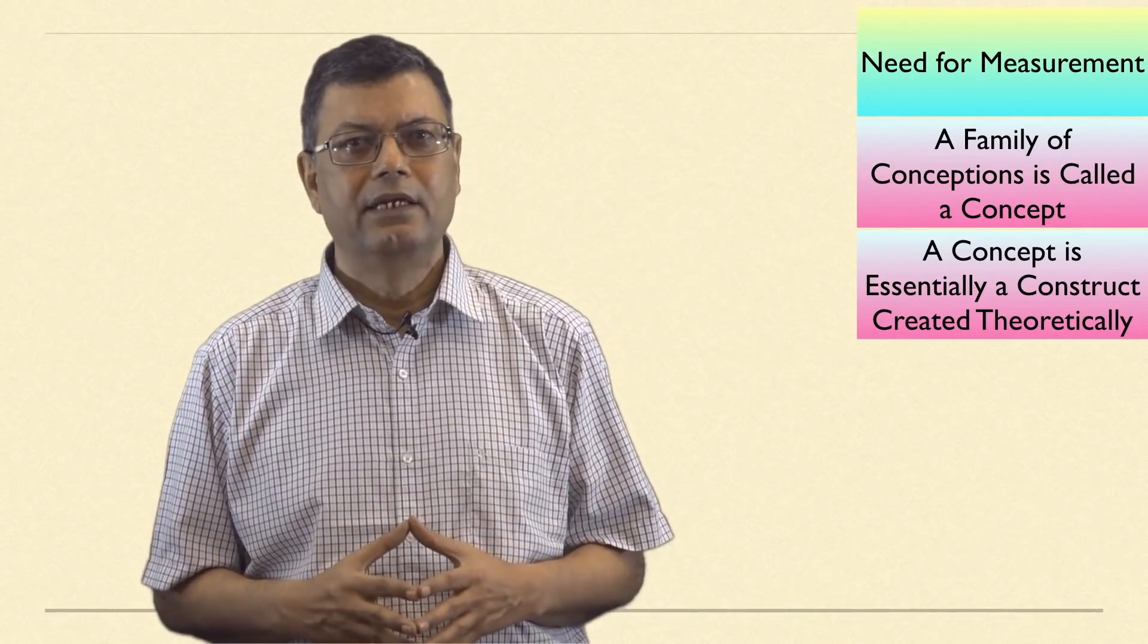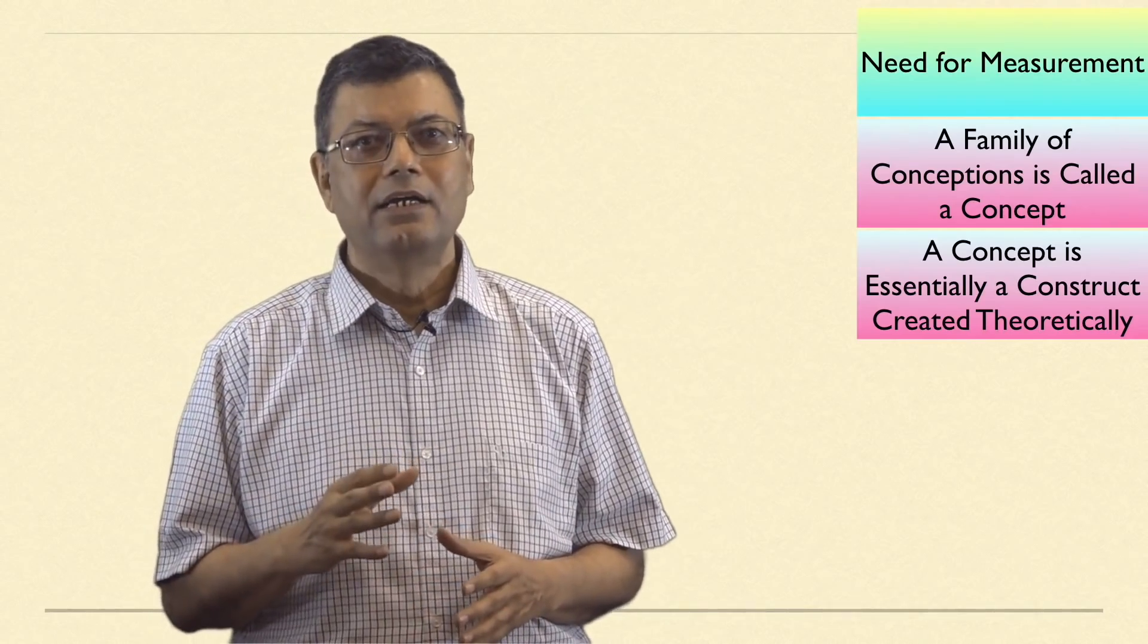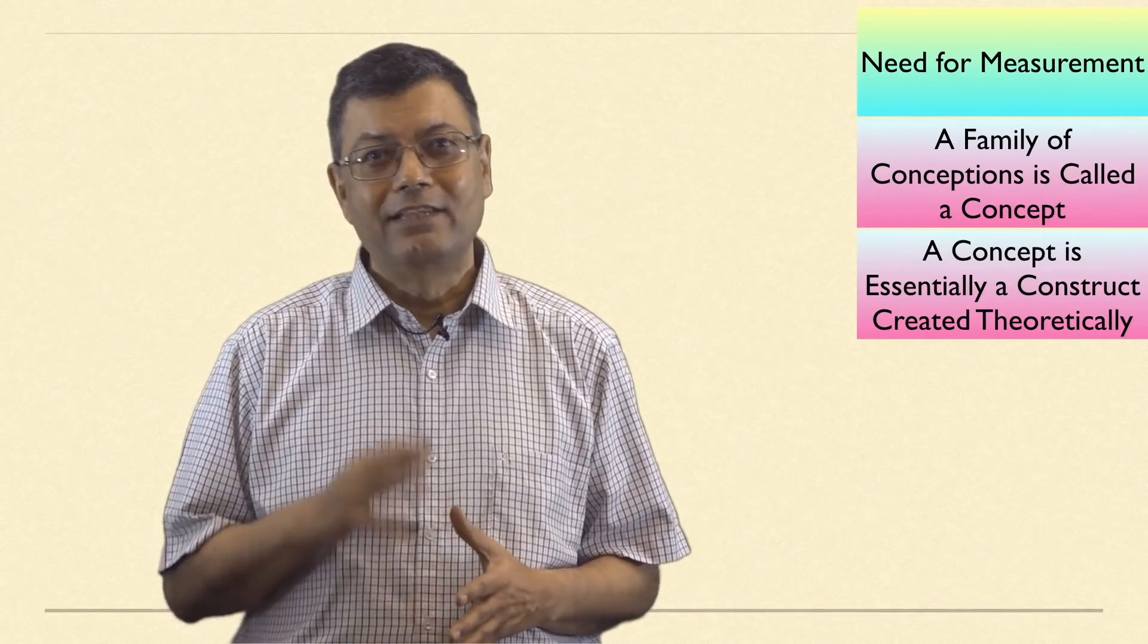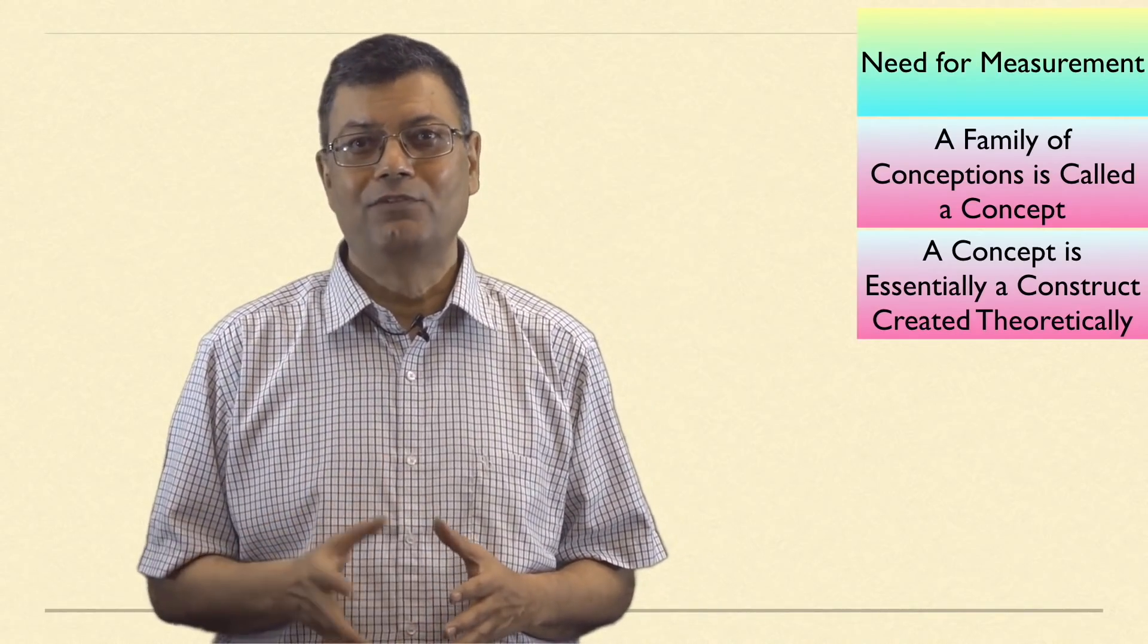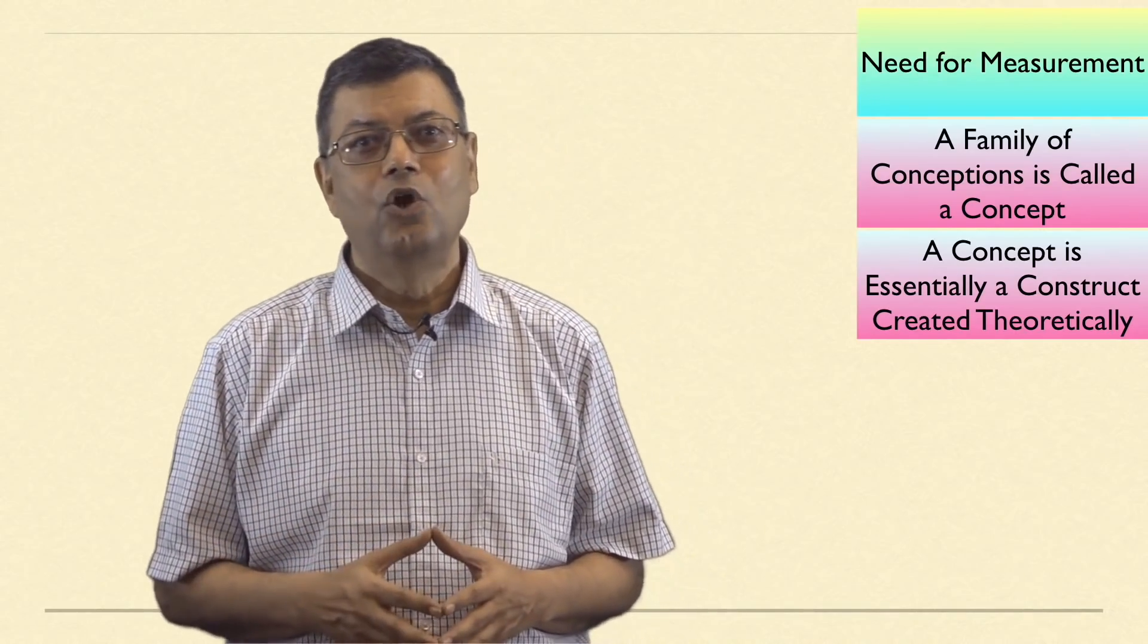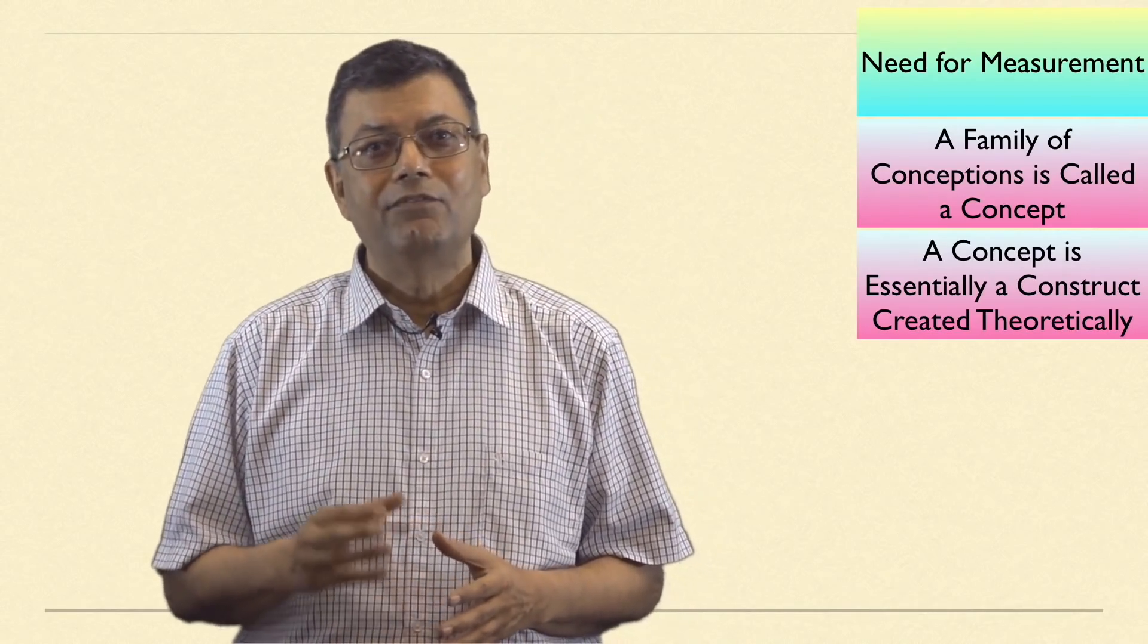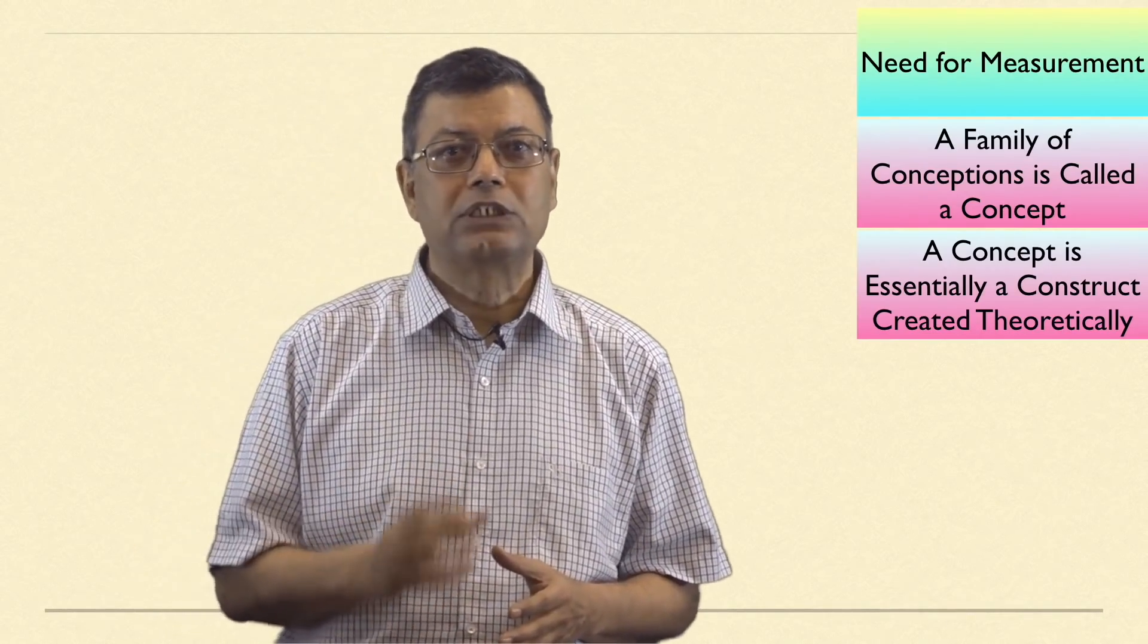Let me just summarize. It will become more clear. There are three types of things that scientists measure. One, those which are directly measurable. Second, those which are indirectly measurable. And thirdly, there are those which are neither directly observable nor indirectly observable. This third category is created as a construct on the basis of the conceptions or mental images observed from the subjects. Concept is this family of conceptions. A concept is, as Kaplan notes, a construct, something we create.